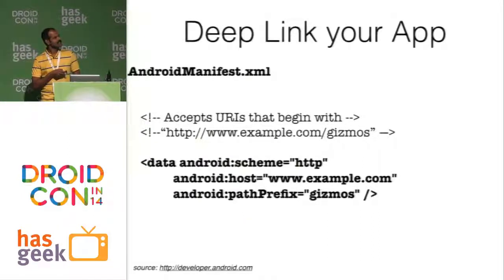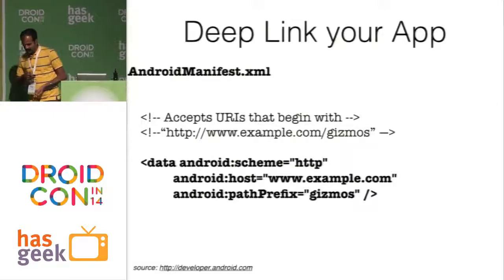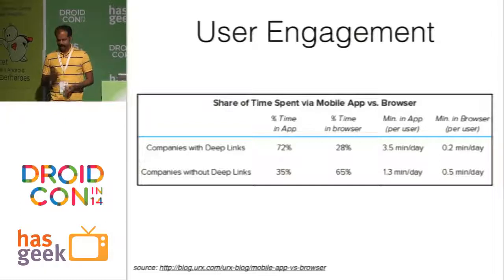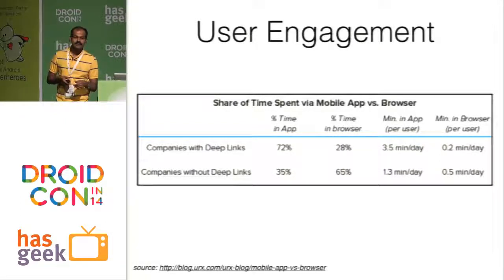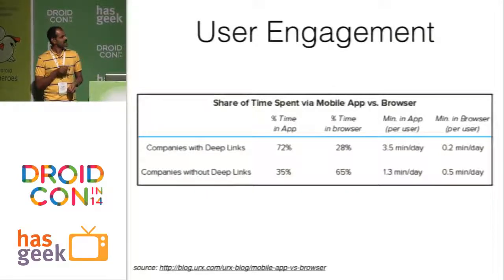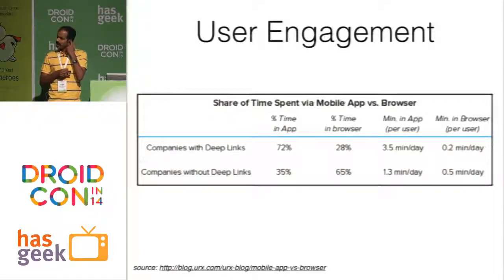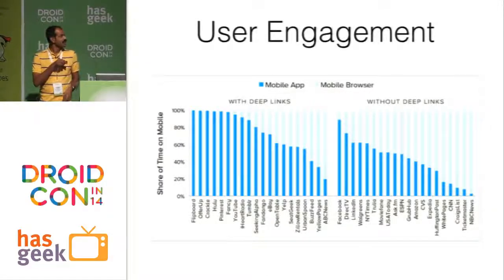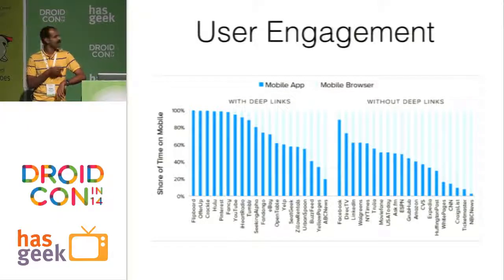Now that we have seen the implementation, let's look at the advantages. Apps that have enabled deep linking got a jump of 2.5 times more than those apps which are not deep linked. The graph also indicates that users are spending more time in apps with deep links as compared with apps without deep links.